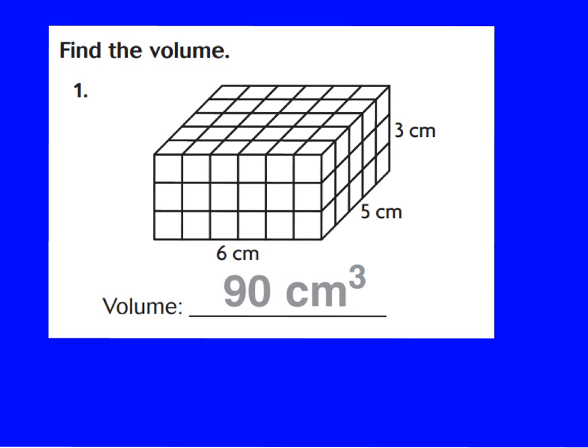All right, boys and girls. Remember, our formula for finding volume is length times width times height. I can see right here that in this first example, we have a length of 6 centimeters, my width is 5 centimeters, and my height is 3 centimeters. Therefore, my formula is 6 times 5 times 3 when I plug in my dimensions. Now, if I use my associative property and group my 6 times 5, I know that should be 30, and I can bring down my times 3. And we all know 30 times 3 is 90.